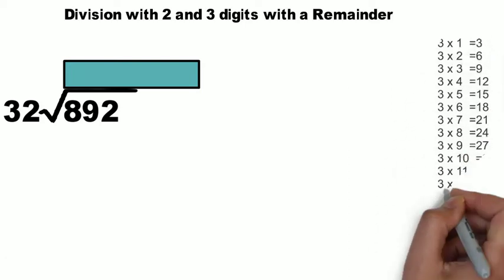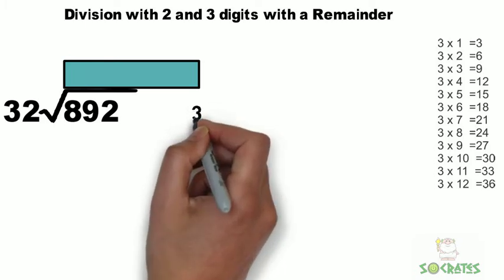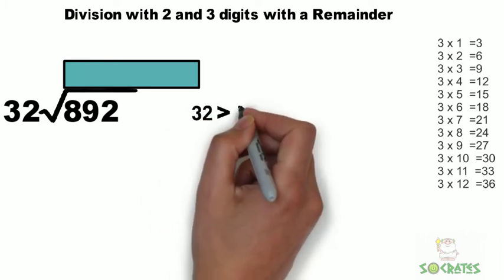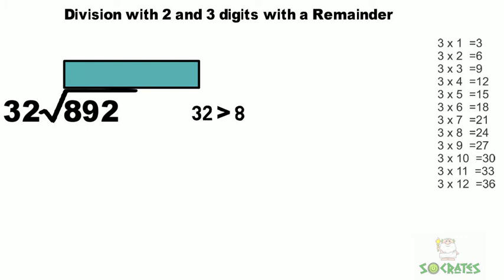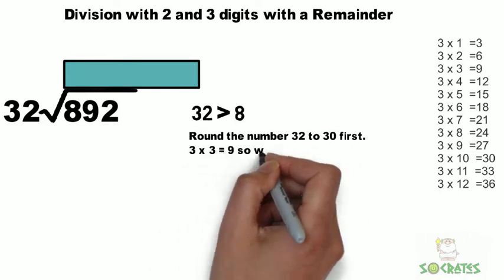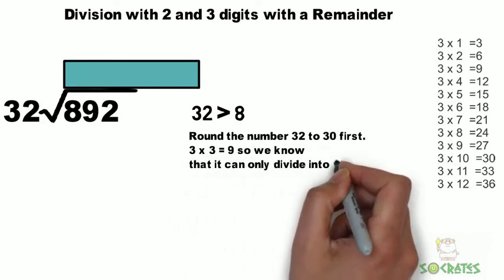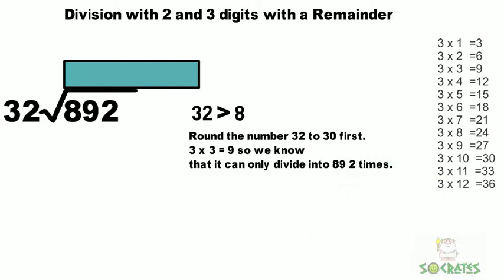Because we're using 32, we can use our threes times tables to help us figure this out. We know that 32 is bigger than 8, so we need to use 89, which is almost 90. Round the number 32 to 30 first, and then you get 3 times 3 is 9 or 90, so it can't go 3 times, so it must be 2 times.